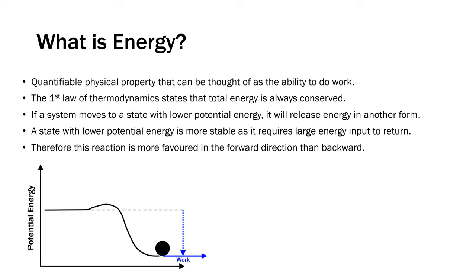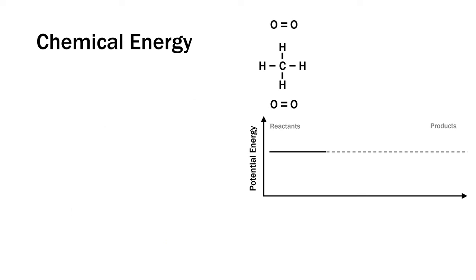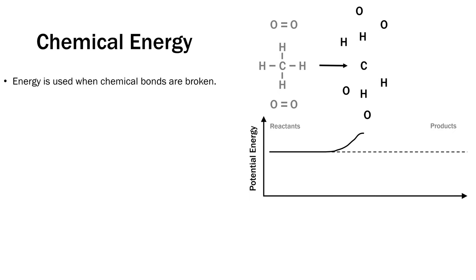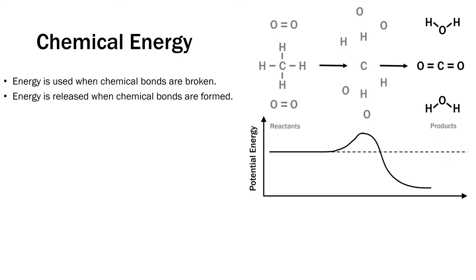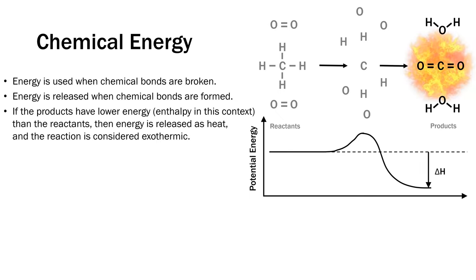Therefore, the reaction is more favored in the forward direction than backward. Looking at chemical energy, such as in the combustion of methane: energy is used when chemical bonds are broken — this is activation energy, bringing elements to a transitional state. Energy is released when chemical bonds are formed. If the products have lower energy, or enthalpy, than the reactants, then energy is released as heat and the reaction is considered exothermic. An exothermic reaction has a negative delta H, which is the change in enthalpy.